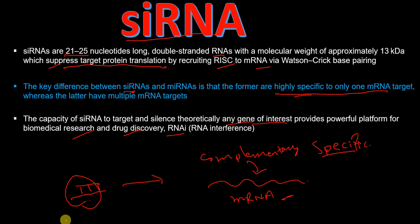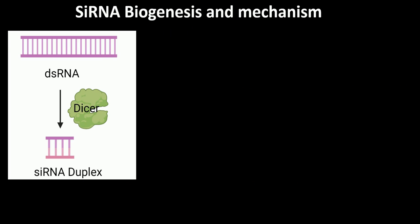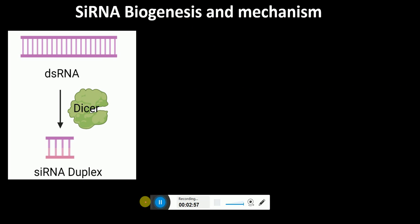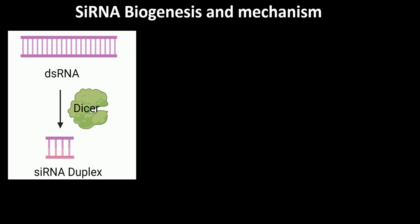I will now talk about how siRNA biosynthesis occurs. The biogenesis of siRNA occurs with the help of Dicer, which is an enzyme. The double-stranded RNA is processed by the enzyme called Dicer, and that results in an siRNA duplex. So the siRNAs are biosynthesized from double-stranded RNA with the help of Dicer.